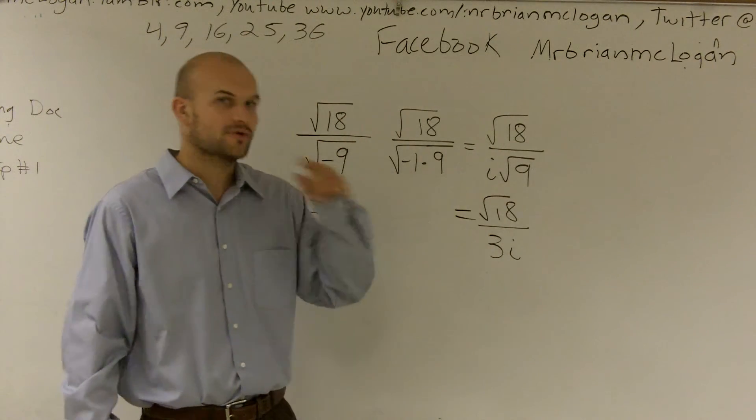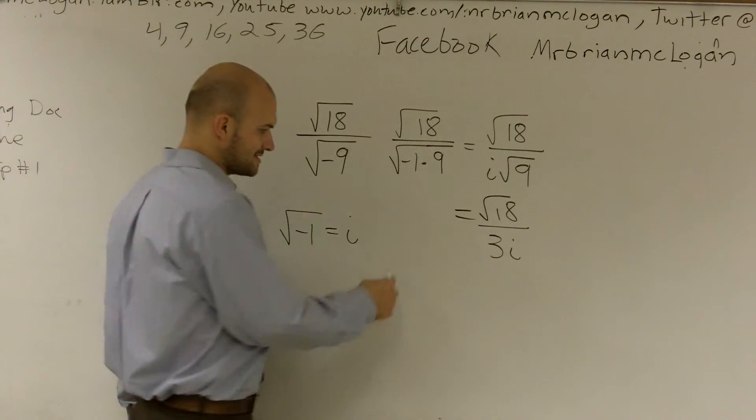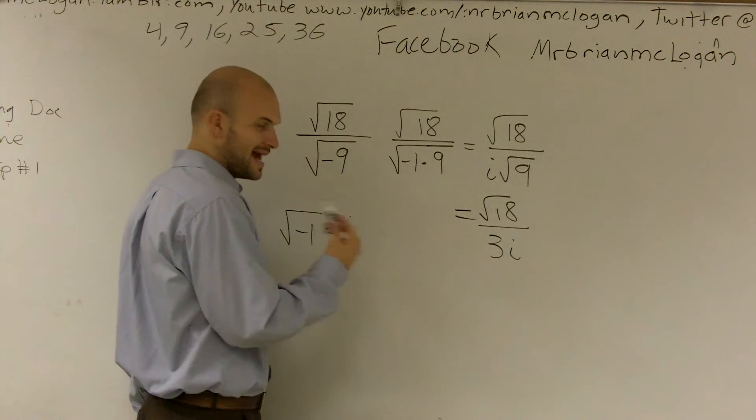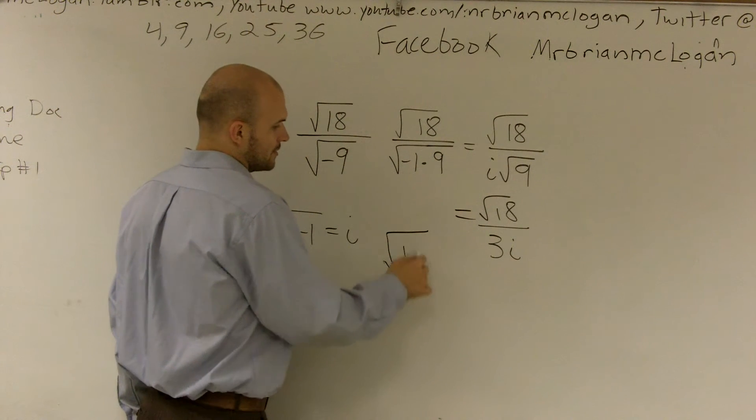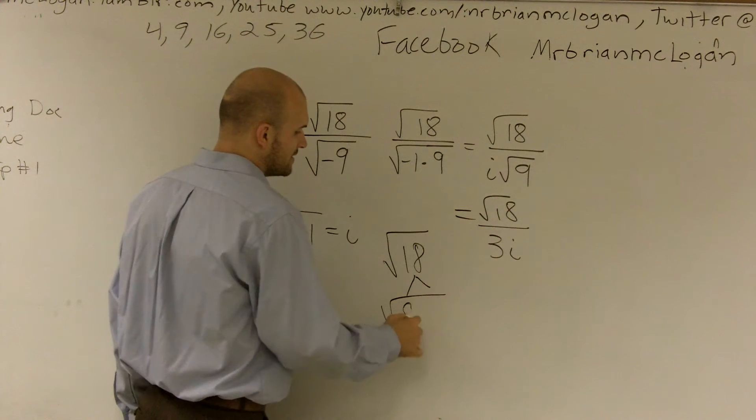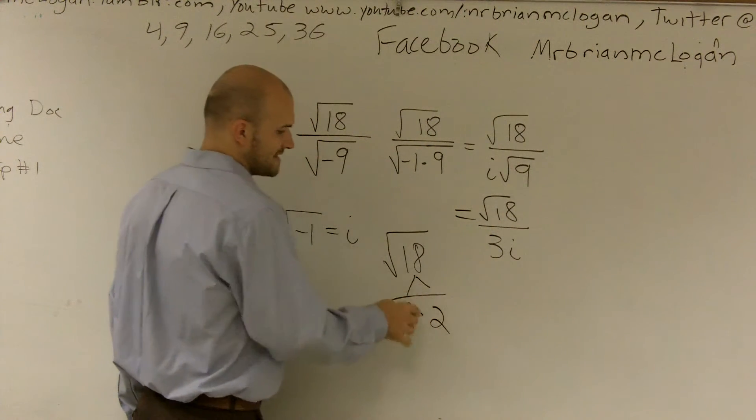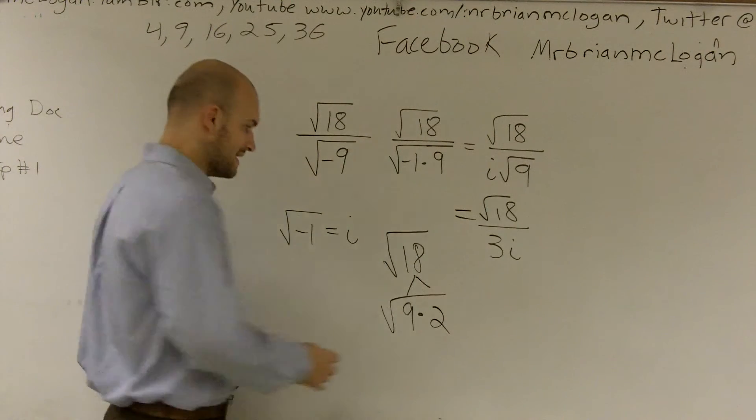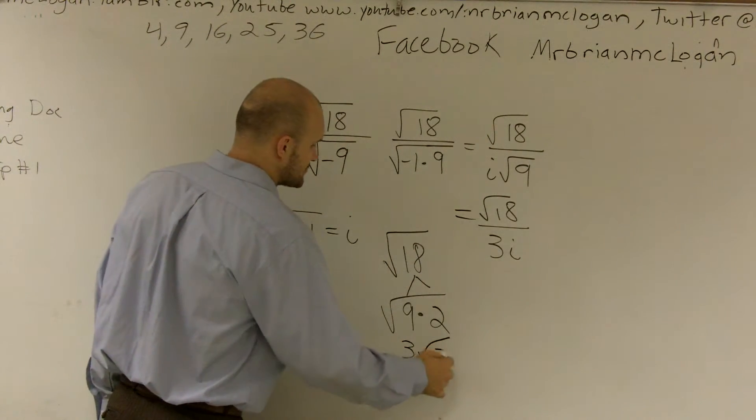I haven't simplified my square root of 18 yet. The square root of 18, that can be reduced down to the square root of 9 times 2 as I factor it out. Well, the square root of 9 is 3 times radical 2.